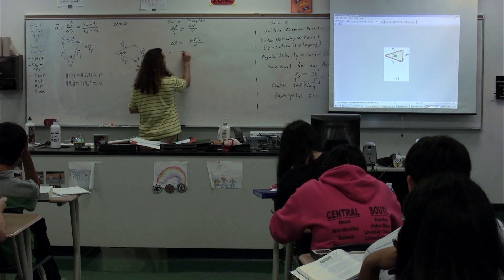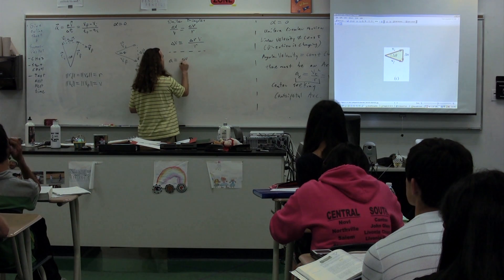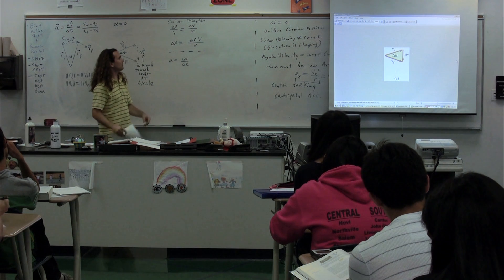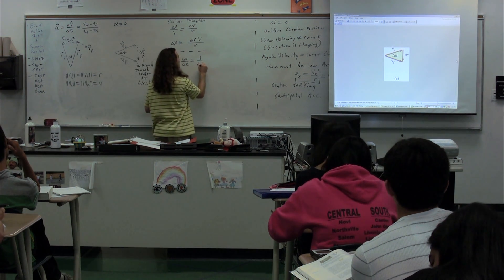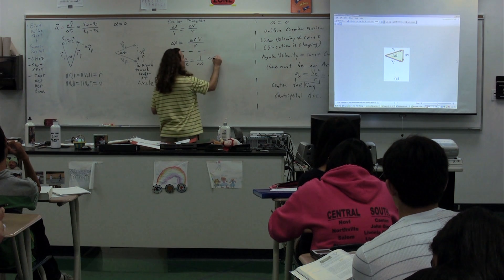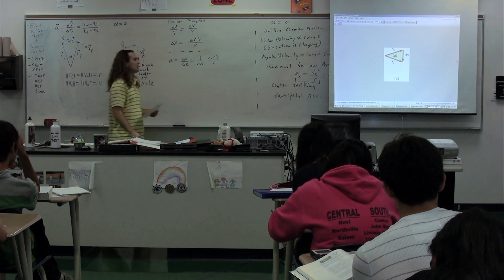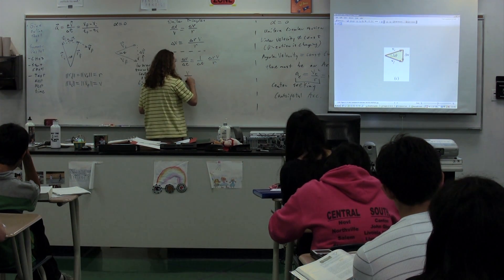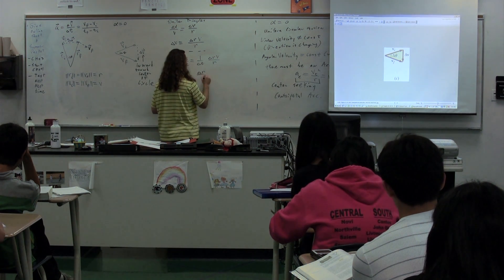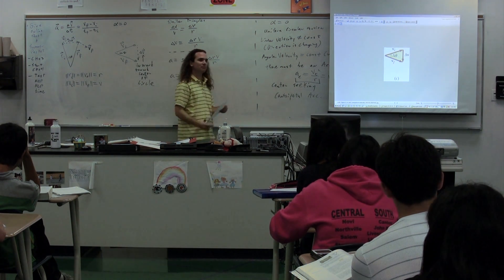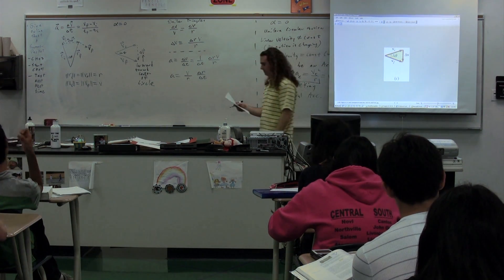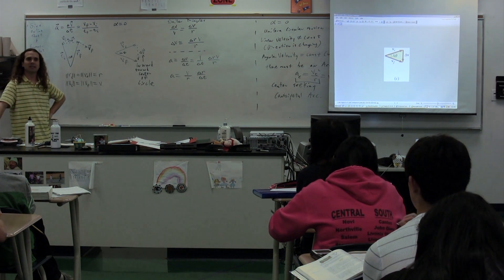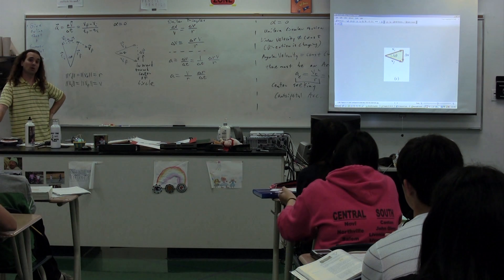Coming back to the definition of acceleration: acceleration is the change in velocity over change in time. I can substitute in for the change in velocity the expression delta R times velocity divided by the radius. In other words, the acceleration is equal to the velocity divided by the radius, multiplied by the change in position over change in time. And class, change in position over change in time is — [Students: Velocity.] What kind? [Students: Average.] In this particular case, it's an average velocity.